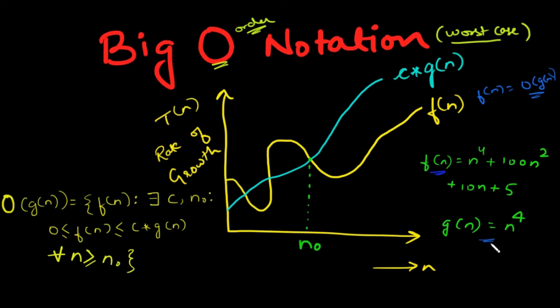What this effectively means is, g(n) gives the maximum rate of growth for f(n) for any value greater than a threshold value of n₀.